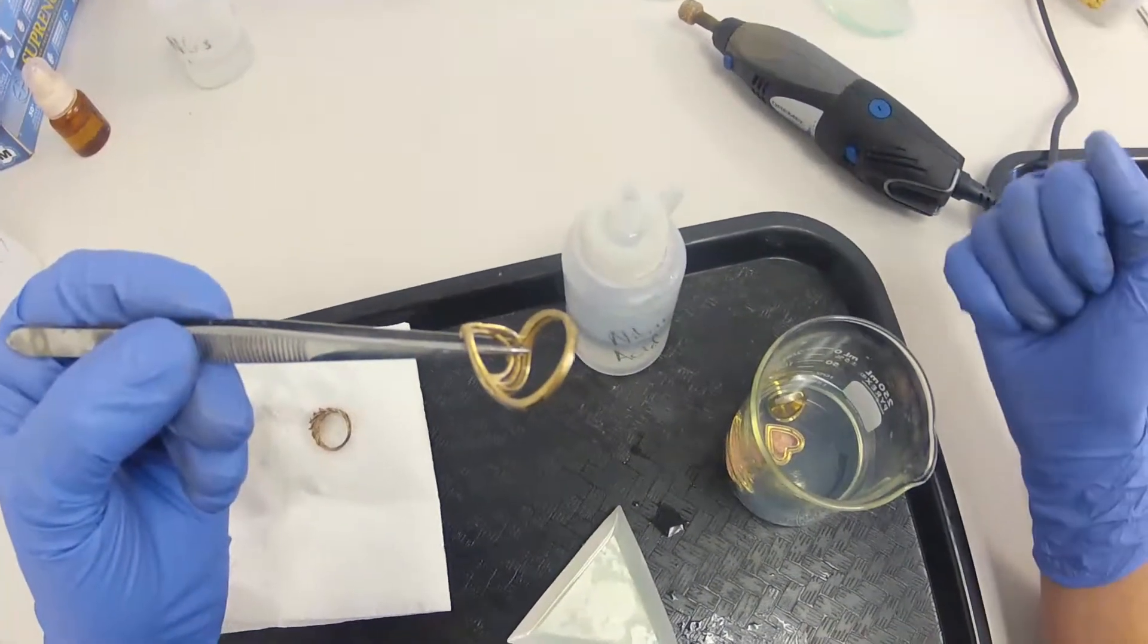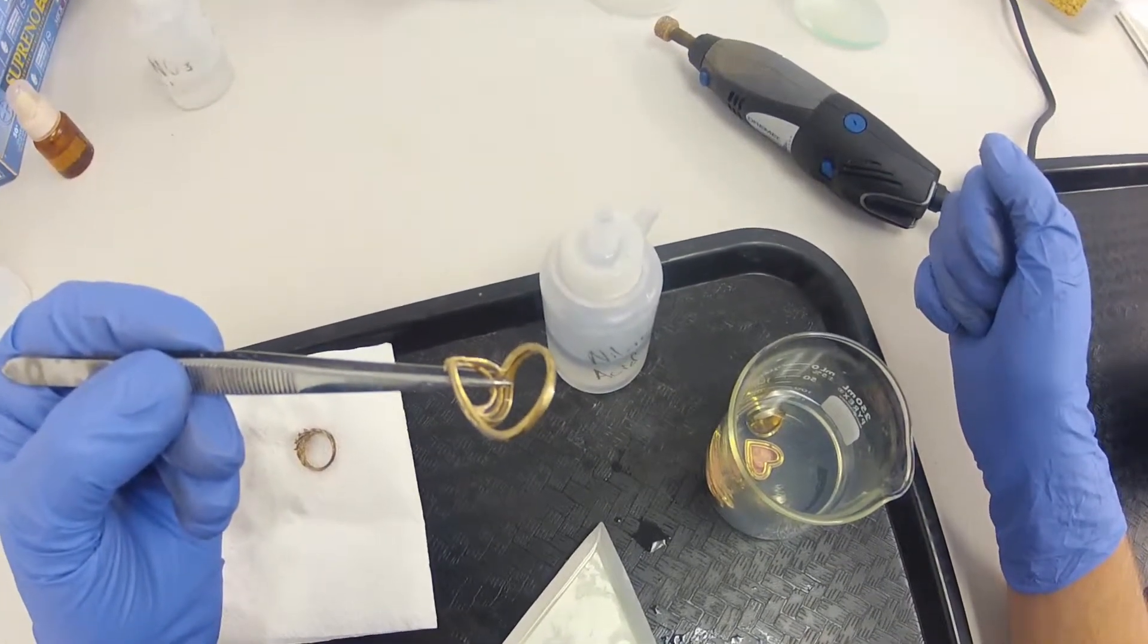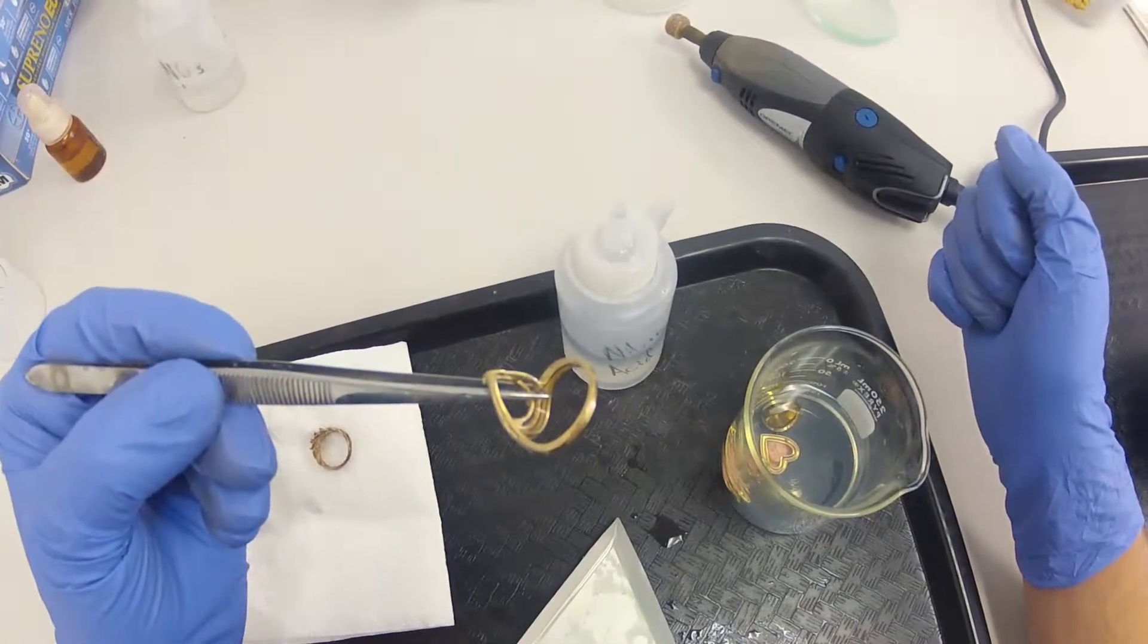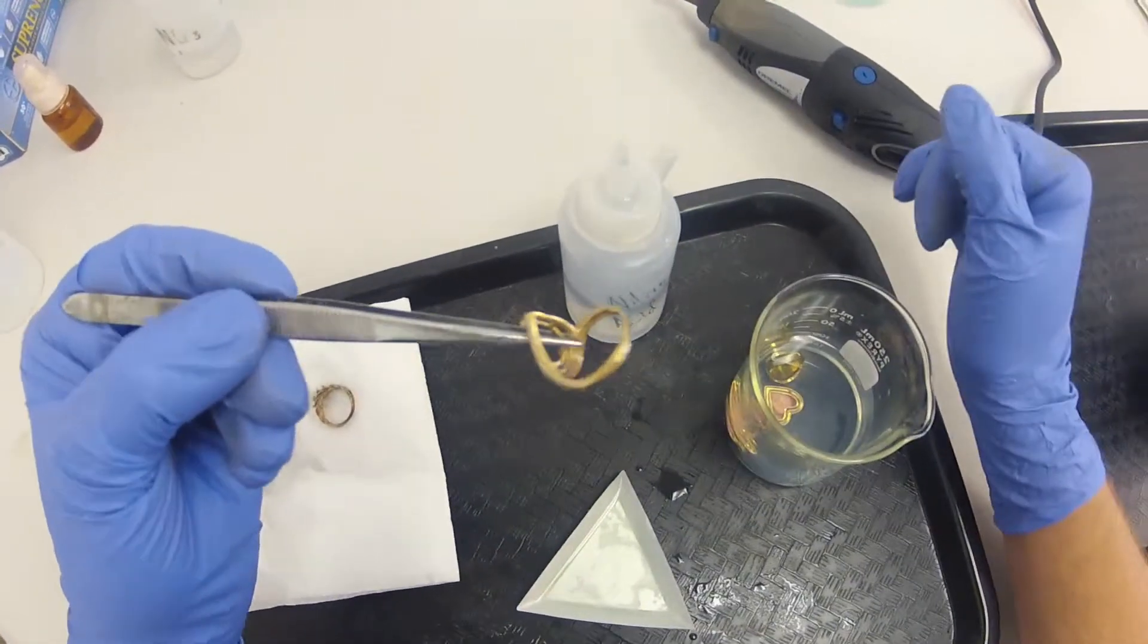The 10 karat, plum 10 karat has 41.7% gold, whereas 14 karat has 58.5% gold. So it's quite a big difference and you can tell the difference just by the way the acid reacts with it.